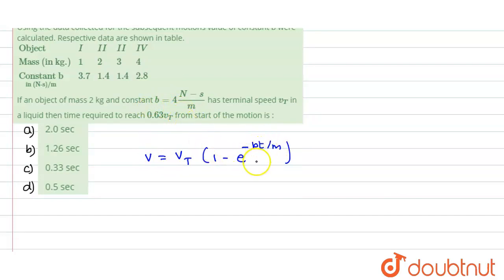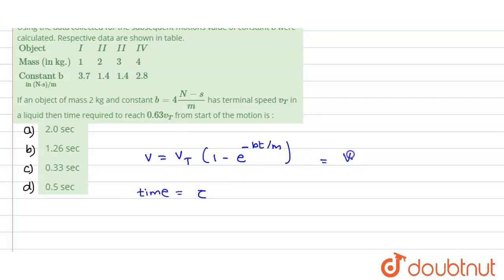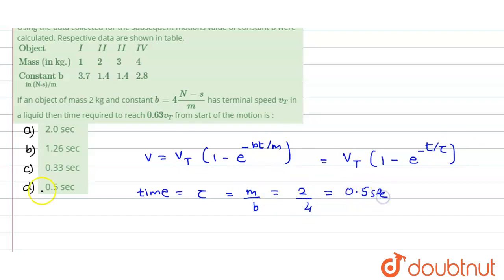This gives an exponential equation. We know that 0.63 vt is approximately 63 percent of the terminal velocity. From alternating current theory, we know that when the value reaches 63 percent, the time required equals the time constant tau. Rewriting the expression as vt times 1 minus e to the power of negative t divided by tau, we compare and find that tau equals m divided by b. With m equal to 2 and b equal to 4, tau equals 2 divided by 4, which is 0.5 seconds. This is the correct answer.